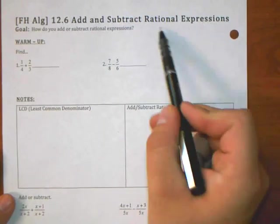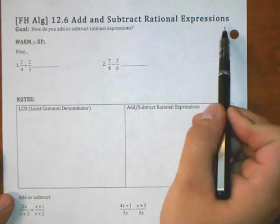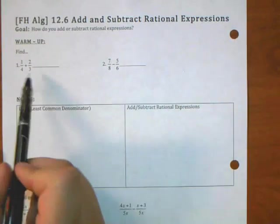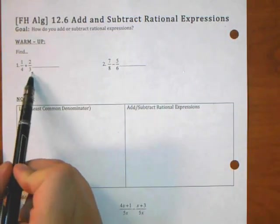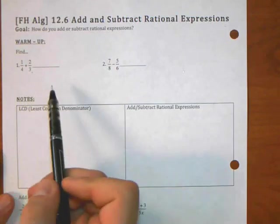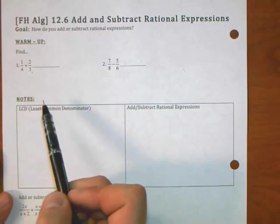Again, we're looking at rational expressions, which are fractions with variables. So that means if we can add fractions with no variables, then the process is hopefully going to be pretty much the same. We're going to try to translate it over.